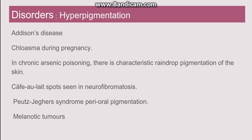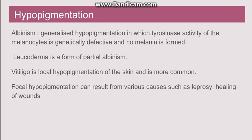Disorders associated with excess melanin include Addison's disease, chloasma during pregnancy, and in chronic arsenic poisoning there is characteristic raindrop pigmentation of the skin. There are café-au-lait spots seen in neurofibromatosis, and in Peutz-Jeghers syndrome there is characteristic perioral pigmentation. Lastly, melanotic tumors can be benign like nevi or malignant like melanoma, both associated with hyperpigmentation.